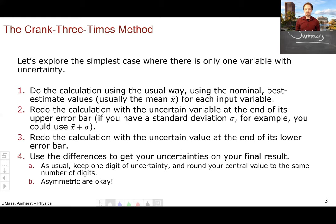Use the differences between steps two and one and steps three and one to get your uncertainties. As usual, you only keep one digit of uncertainty and round your central value to that same number of digits. And furthermore, as we'll see in our example, asymmetric uncertainties are perfectly okay. You see these all the time in research, and this method will actually give you asymmetric uncertainties.